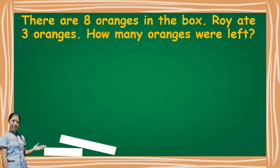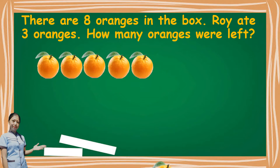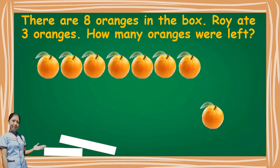Let us read the problem. There are eight oranges in the box. Three oranges were eaten. How many oranges were left? So, how many oranges are there in all? Very good. There are eight oranges in all. And how many oranges were eaten? Yes, there are three oranges eaten.